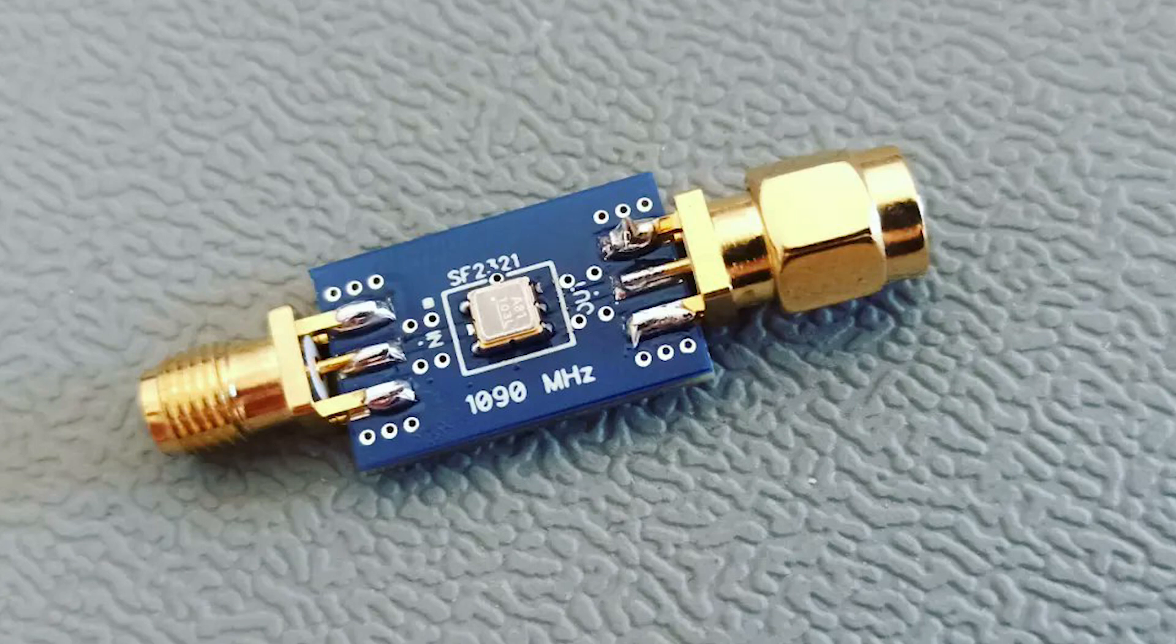If you take a close look at the traces connecting the SMA connectors with the SAW filter, you will notice that they are rather thin. They have a width of just 0.75 mm and a length of approximately 3.5 mm. Since this is standard 1.6 mm thick FR4 PCB material,